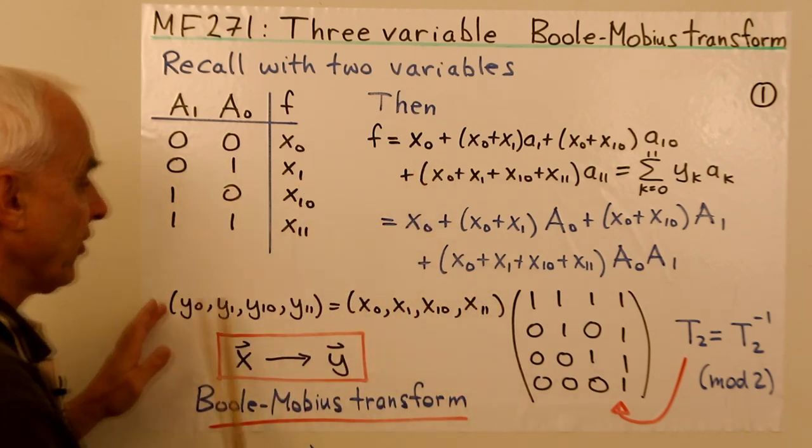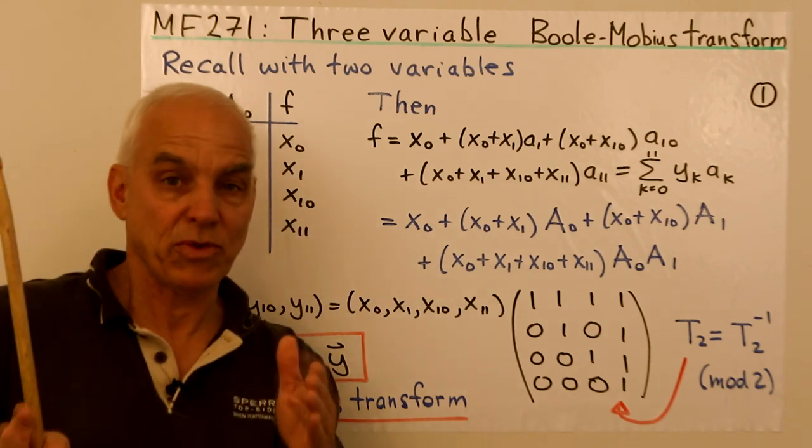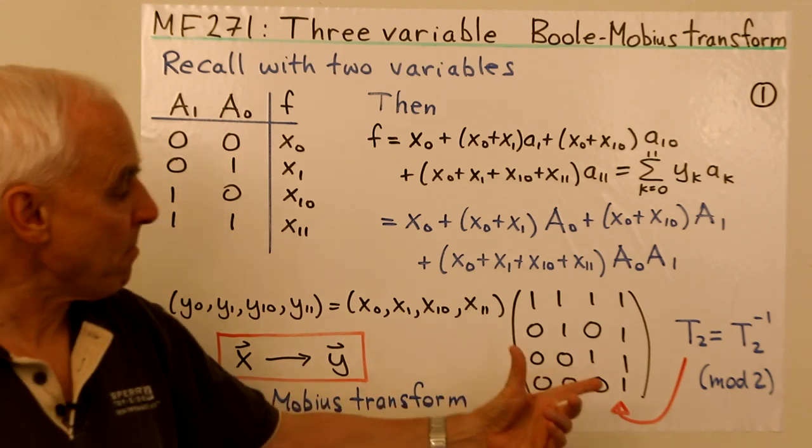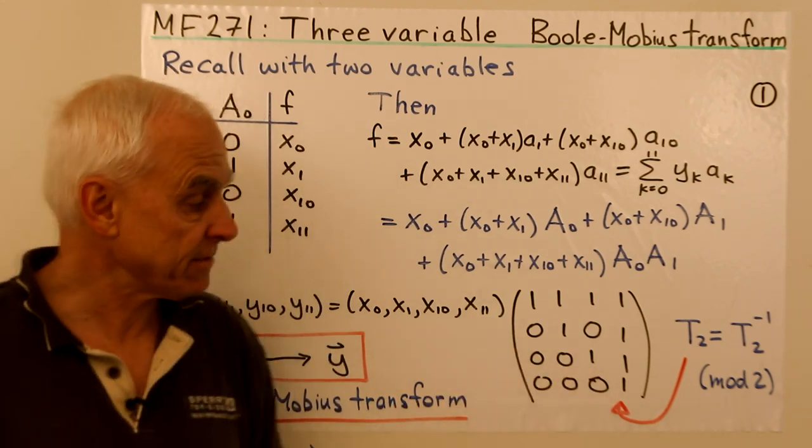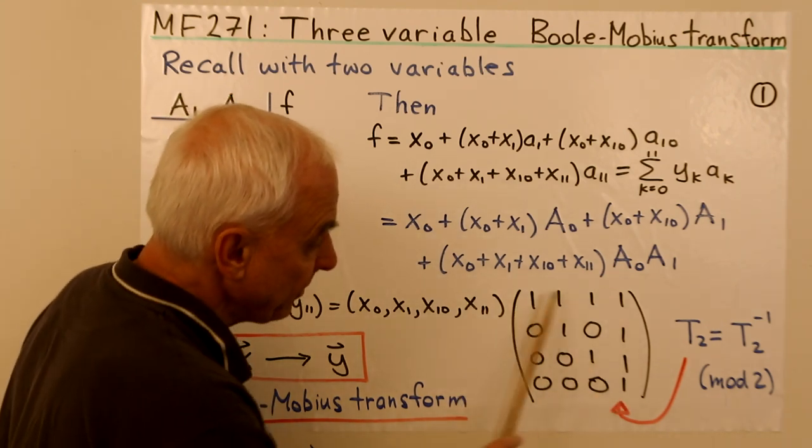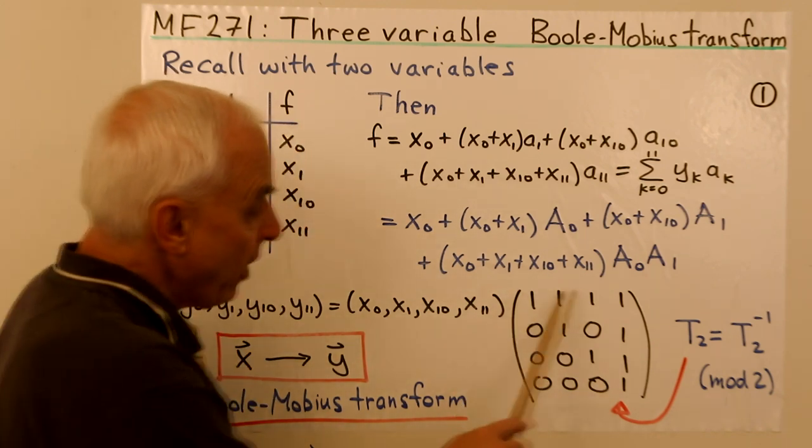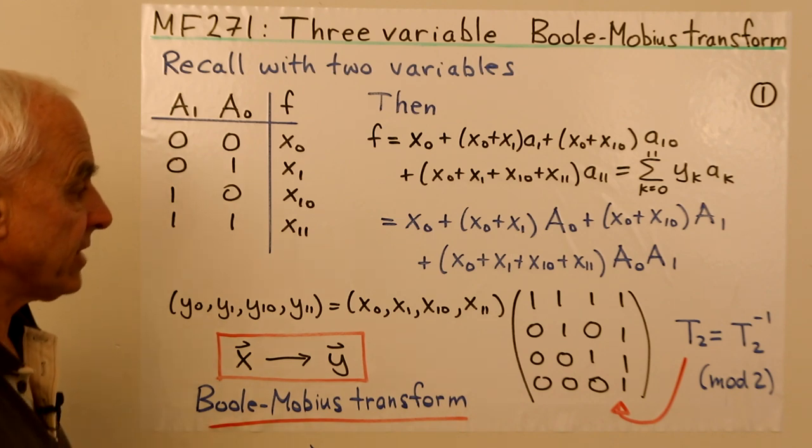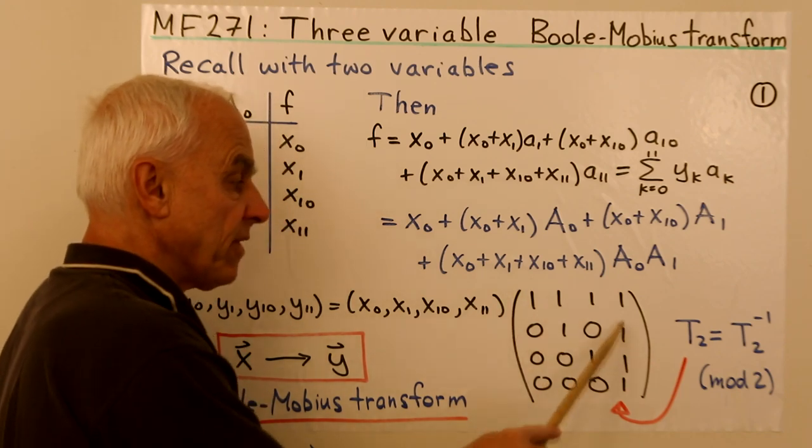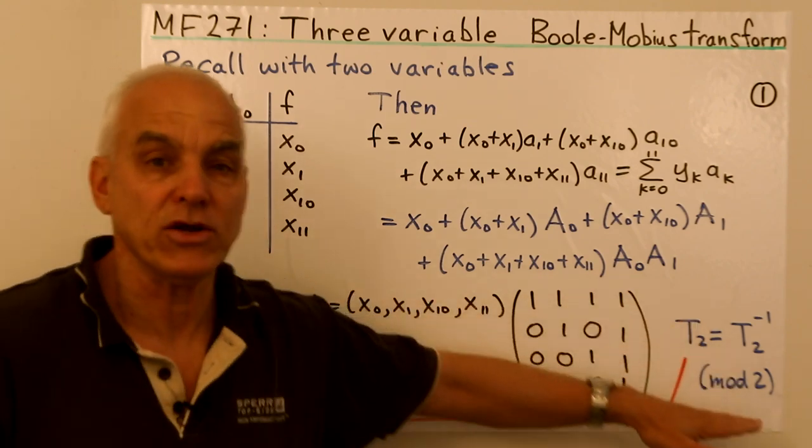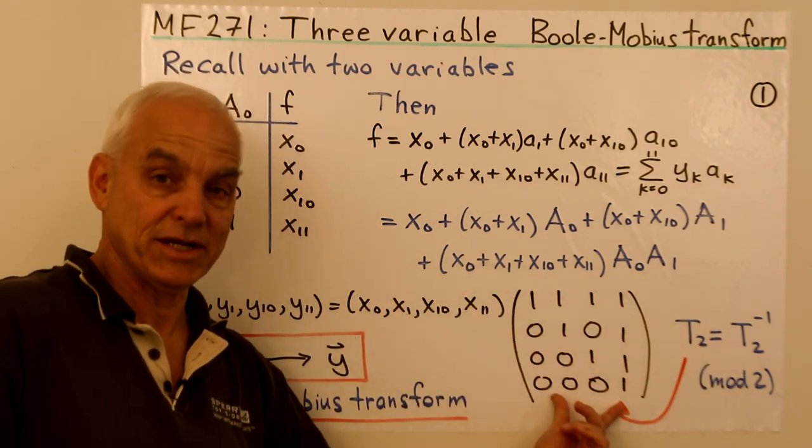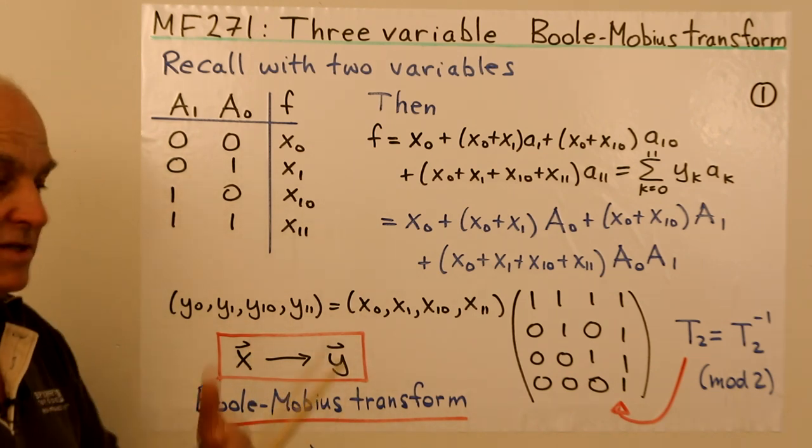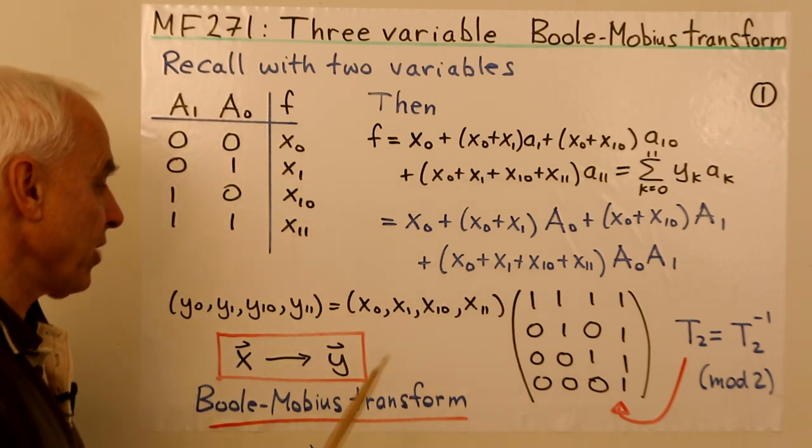The relationship between the y's and the x's is given by this basic equation where we employ linear algebraic notation. To go from the x vector to the y vector, we multiply by this 4 by 4 matrix. It's a matrix with zeros and ones, upper triangular, with ones along the diagonal. If we call this matrix T2, then its inverse looks very much the same, except with a few minus signs. When we look at the inverse mod 2, we get exactly the same matrix as the original T2.